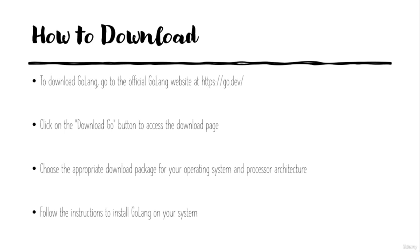How can we download Go? To download Golang, go to the official Golang website at go.dev. Click on the download Go button to access the download page. Choose the appropriate download package for your operating system and processor architecture — whether you use Windows, MacOS, Linux, or other operating systems — and follow the instructions to install Golang on your system.